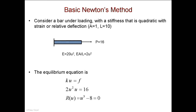Please do not confuse this residual with the residual function from weak form Galerkin — it's not the same thing. This is just the error you incur. If I start with U equals 0, is that the correct solution? If I put 0, I get an error of minus 8 — that's not right. We know the solution is U equals 2. I'll show you how to solve this nonlinear equation, even using Excel. We can do this in Excel really quickly.